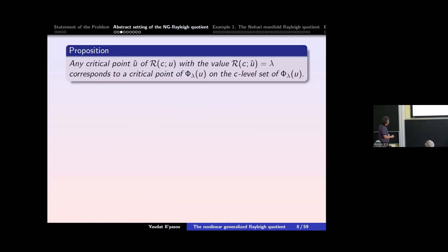So we can conclude that any critical point of the Rayleigh quotient function, with its corresponding value, corresponds to a critical point of our function that we study on the level set belonging to C.